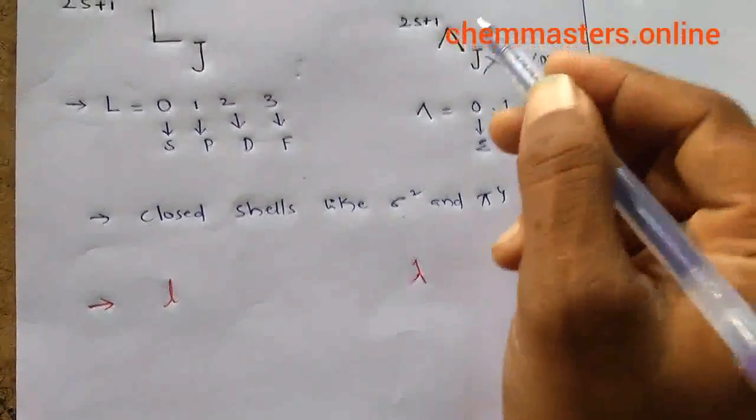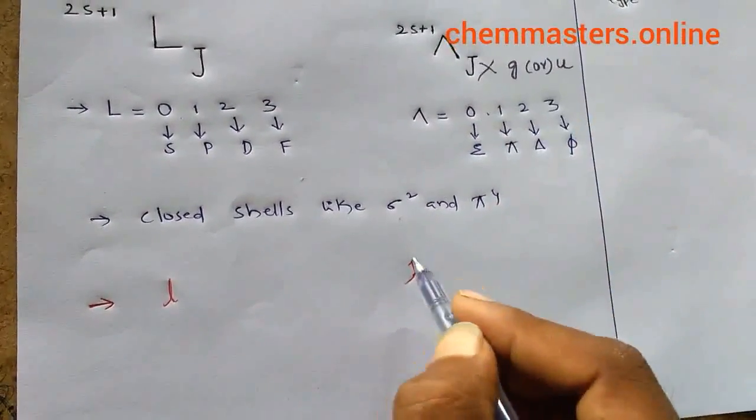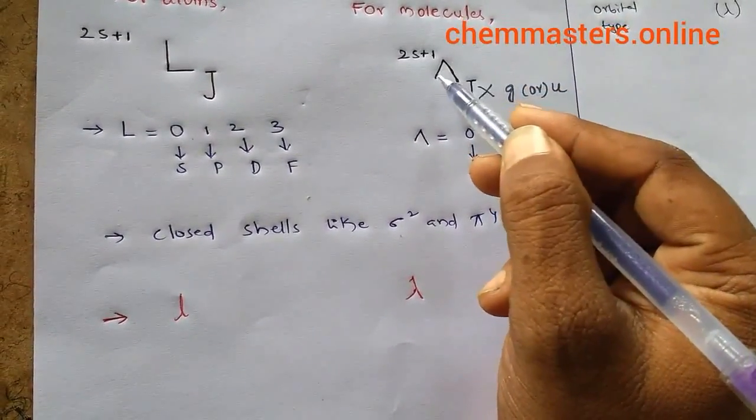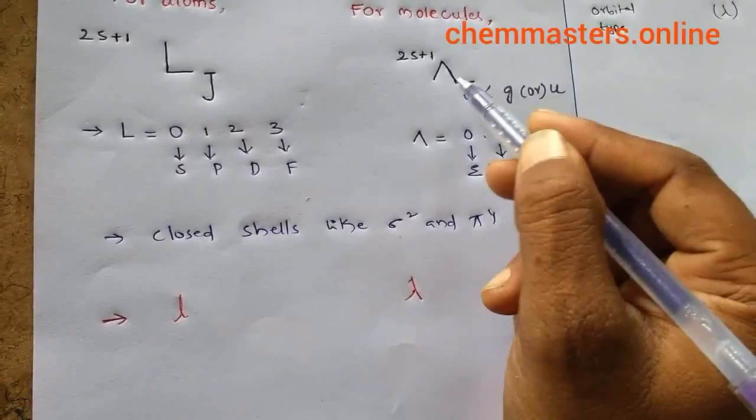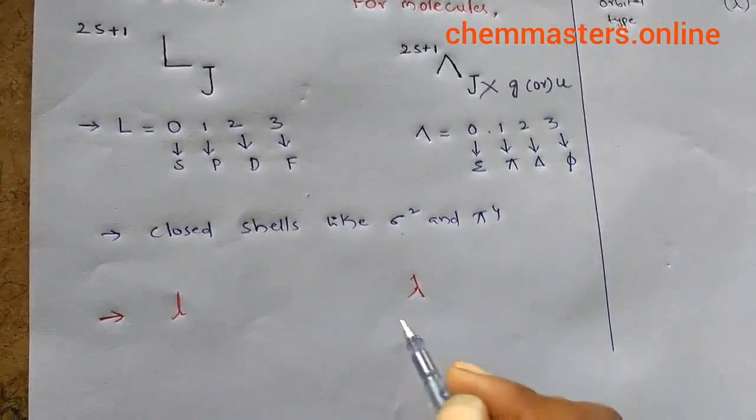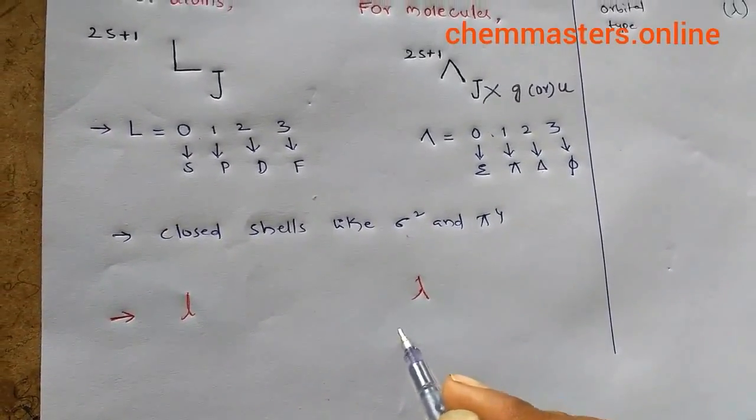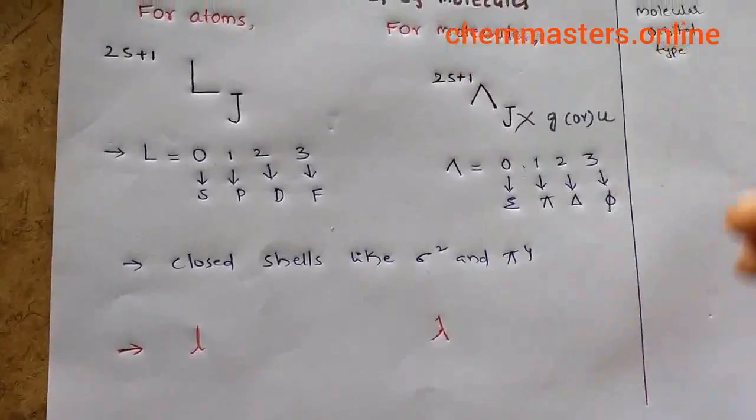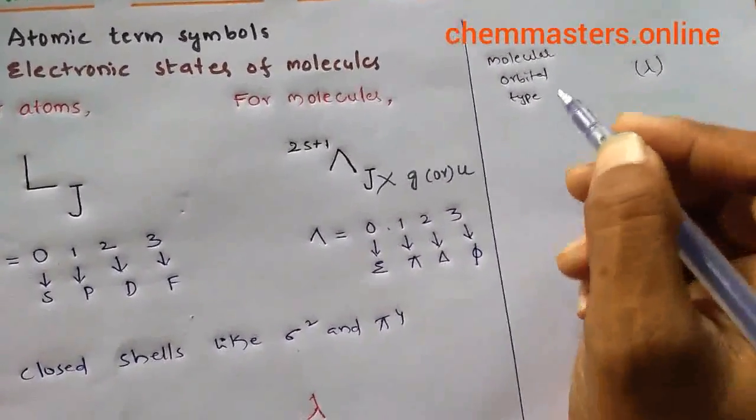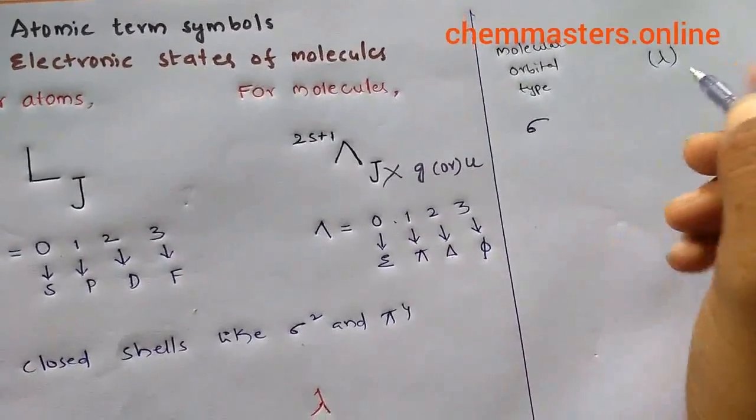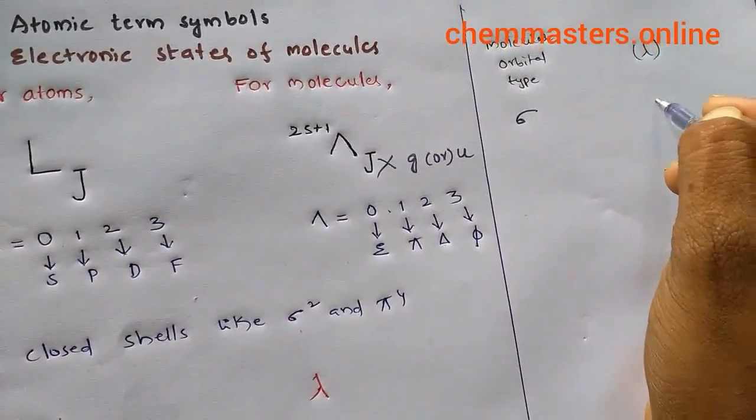For molecules, we can calculate or determine molecular total angular momentum quantum number Lambda by considering lambda values. If you observe for the molecular orbital type, if Sigma is there then lambda value is taken as zero.